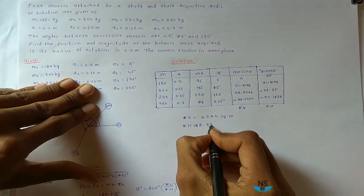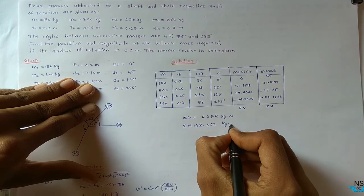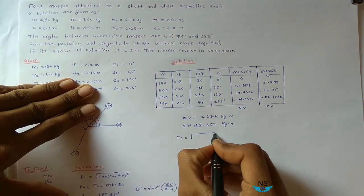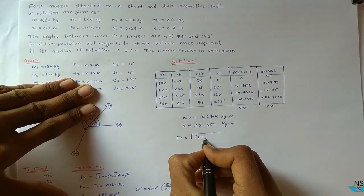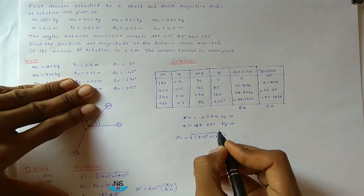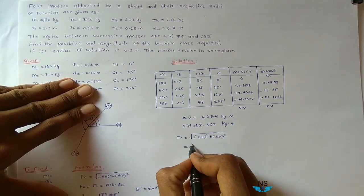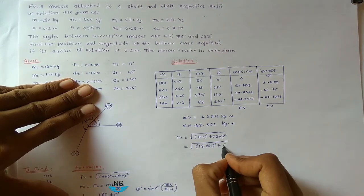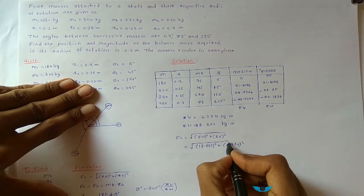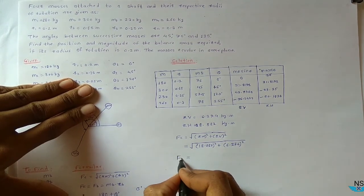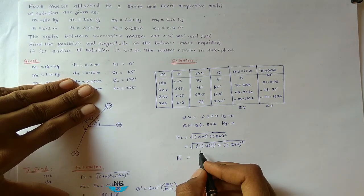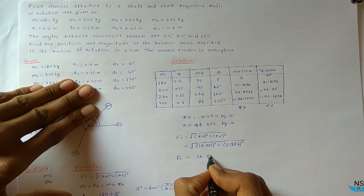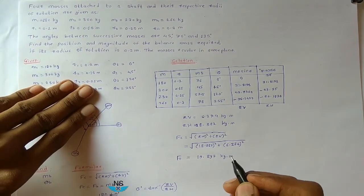Now find the resultant centrifugal force: Fc equals the square root of (summation H squared plus summation V squared), which equals the square root of (18.825 squared plus 6.274 squared). You get the value of the balancing centrifugal force Fc equal to 19.897 kg·meter.